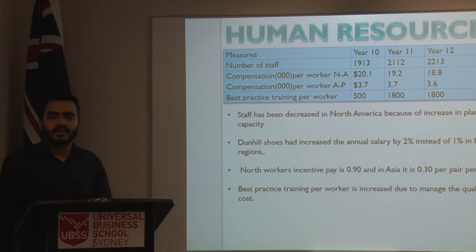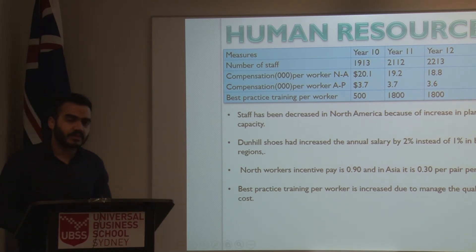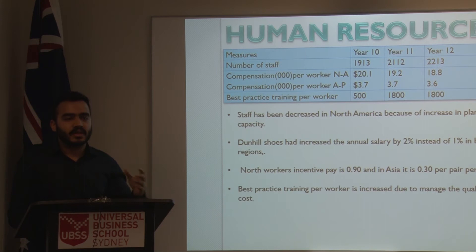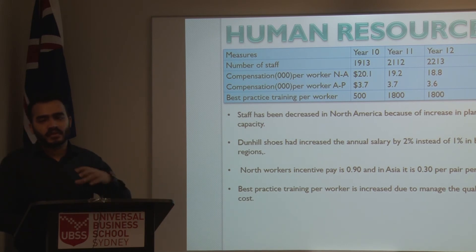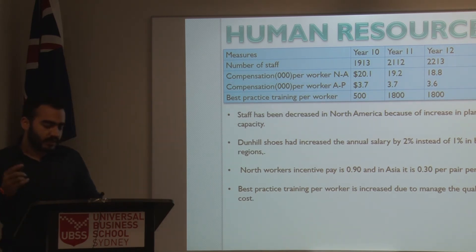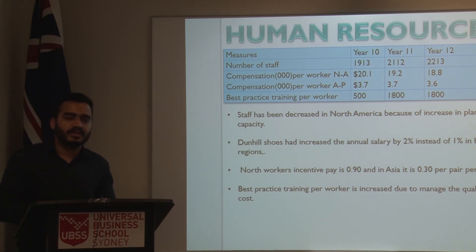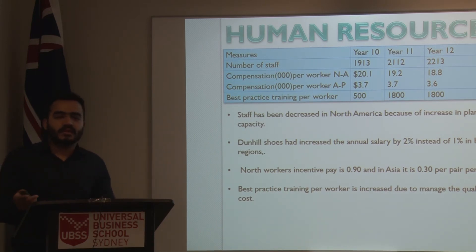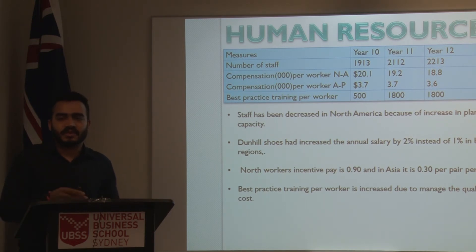Good evening, I'm Ali, the human resource and marketing manager. In human resources, our number of staff has decreased because we have increased our productivity and upgraded our plants, which helped our workers increase their productivity. Our labor costs in year 13 also increased — we were paying an annual increase of 1% and in year 13 we increased that to 2%. We are still paying $1,800 on best practices as my colleagues mentioned.